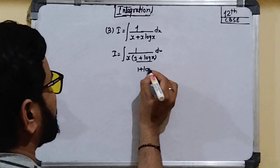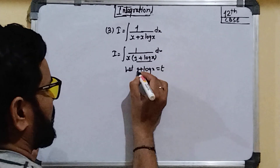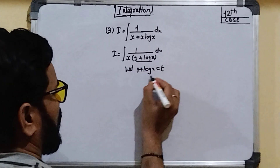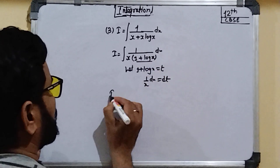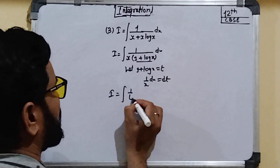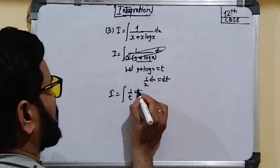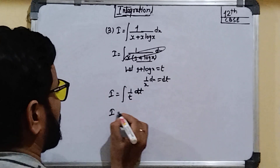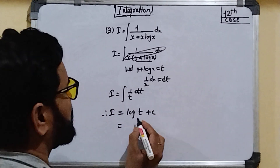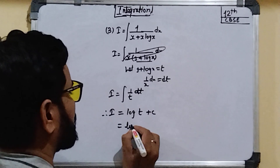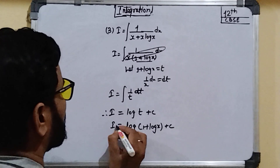We take 1 + log x as t. Differentiating, the derivative of 1 is 0 and the derivative of log x is 1/x, so (1/x) dx = dt. The integral becomes 1/t dt. Therefore the result is log t + c, and replacing t with (1 + log x), the answer is log(1 + log x) + c.